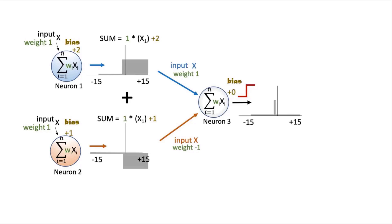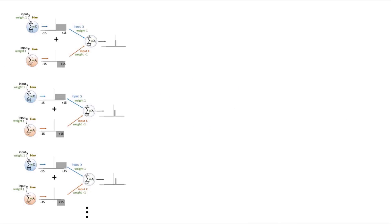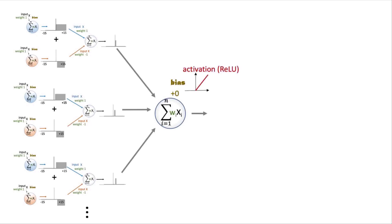We can shift the position of this rectangle depending on what the biases are for the first two input neurons. And now we can compose together as many neurons as we need which output thin rectangles with positions at different locations. Let's take all these neurons that output thin rectangles at different positions and feed these neurons into yet another neuron. This final neuron that takes in all the different rectangle inputs — we're not going to use the step activation function anymore. Instead, we're going to give this final neuron a rectified linear unit activation function, also known as ReLU.